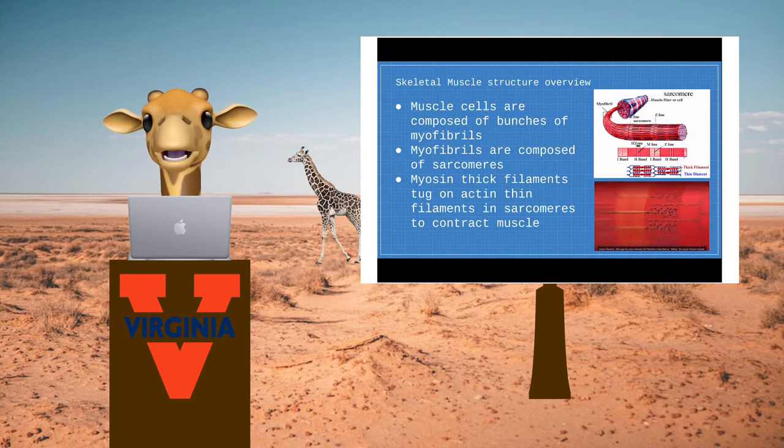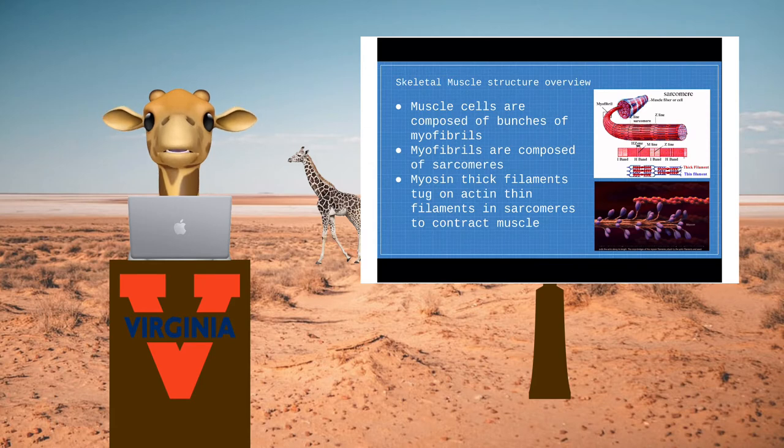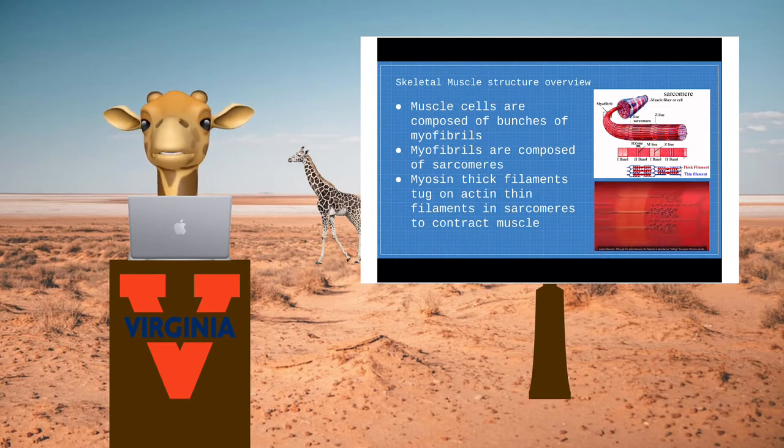Thick filaments composed of myosin motor proteins use ATP to tug on thin filaments composed of actin protein. This action pulls the overlapping filaments against each other and shortens the muscle fibers, contracting the muscle.